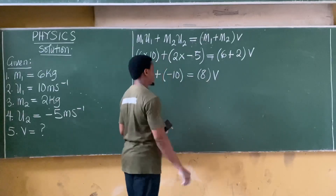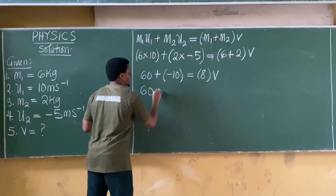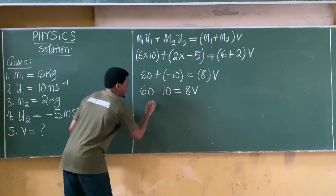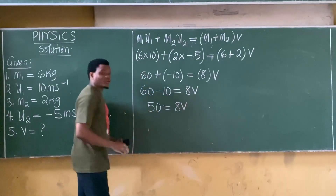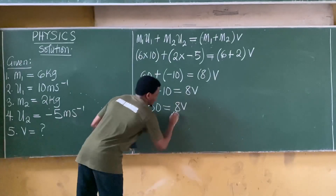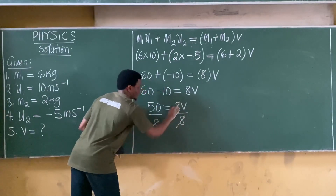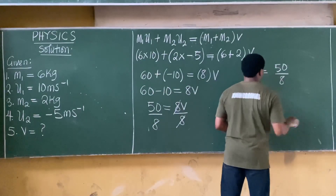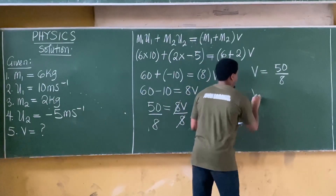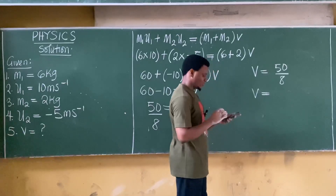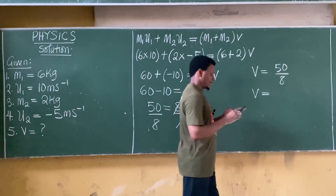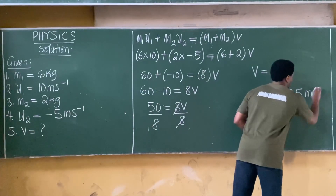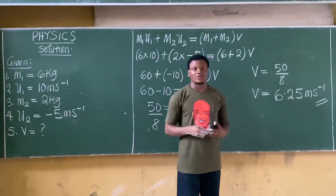So 60 + (-10) = 50, which equals 8v. To get the value of v, divide both sides by 8: v = 50/8, which equals 6.25 meters per second. That is the answer to this question.